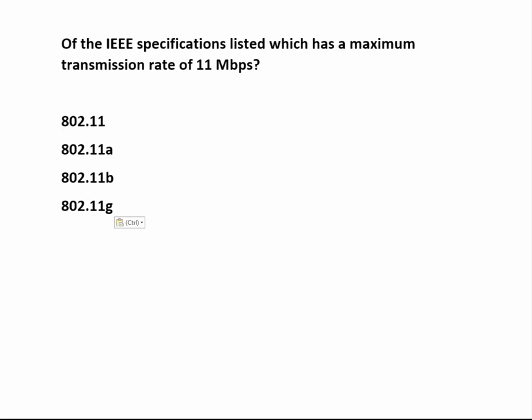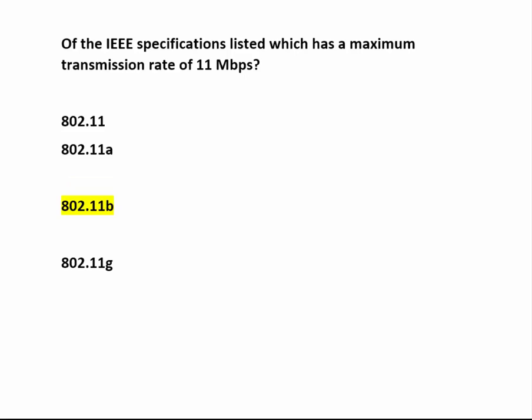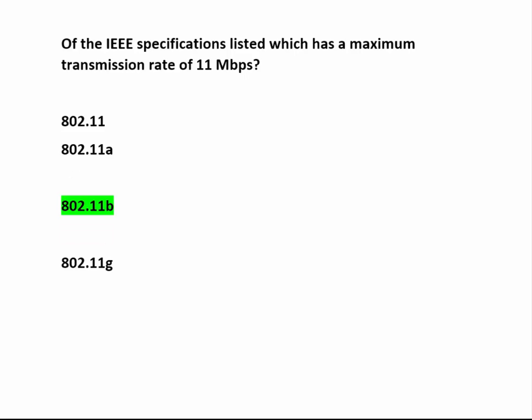Looking at the distractors, we see 802.11 which maxes out at 2 Mbps. Next is 802.11 A — quite fast at 54 Mbps but expensive. Now the 802.11 B at a max of 11 Mbps — it had a more consumer-friendly price point and quickly took over the market. 802.11 G hit the scene with 54 Mbps speed and backward compatibility with 802.11 B, as they both use the 2.4 GHz frequency range. Your correct response here is 802.11 B.